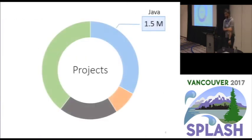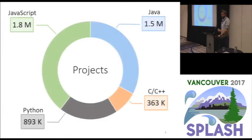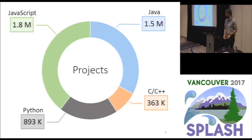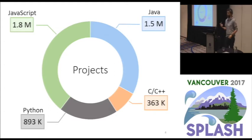We selected four languages: Java, C and C++ (which for this talk we group into one bucket), Python, and JavaScript. For these languages, we downloaded every single GitHub repository as of the end of 2016. We excluded forks because forks are obviously duplicates. Java and JavaScript were by far the most popular, with 1.8 and 1.5 million projects respectively. C/C++ and Python were slightly less popular.